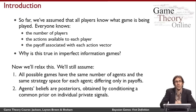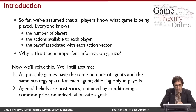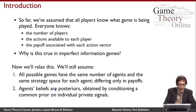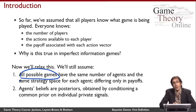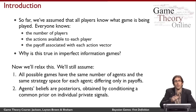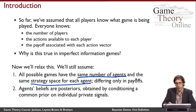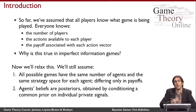Now we want to think about games where these assumptions aren't true anymore. What we're relaxing is that all players know what game is being played. We're now going to think about the idea that there's more than one possible game that the players can think about. Among all of these possible games, they're all going to have the same number of agents and the same strategy space for each agent — so how they differ is just in the utility functions.